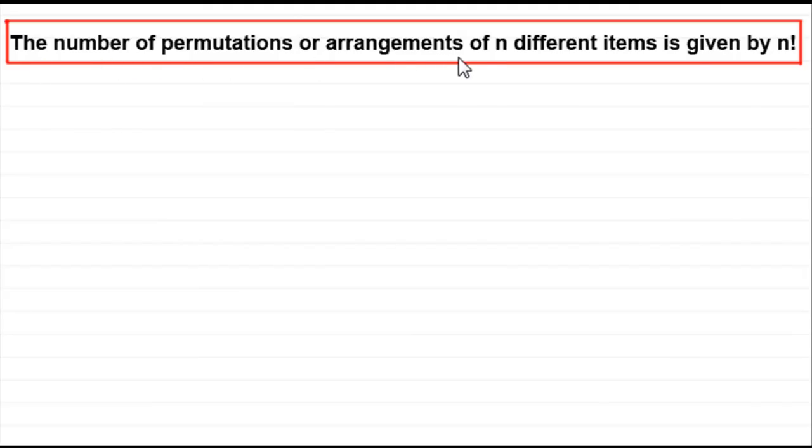where we looked at the number of permutations or arrangements of n different items, which was given by n factorial. Do you remember, we had examples similar to this, where I had, say, three different letters: A, B, C,